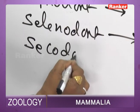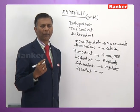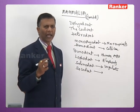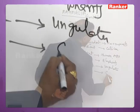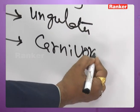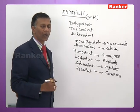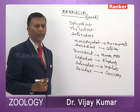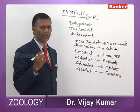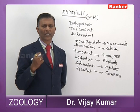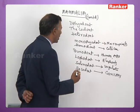Secodont dentition has pointed, dagger-shaped cusps meant for tearing flesh. Secodont dentition is found in carnivores. In carnivores, the last premolar and the first molar have dagger-shaped cusps. Those dagger-shaped cusps of the last premolar of the upper jaw and the first molar of the lower jaw are called carnassial teeth.